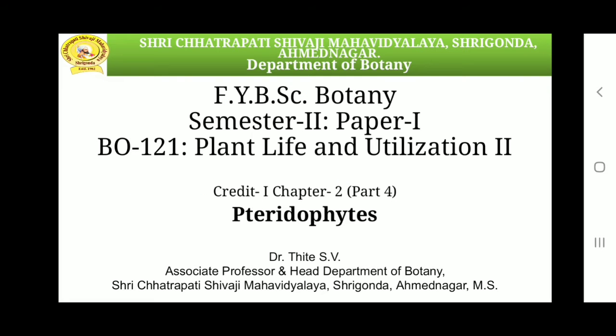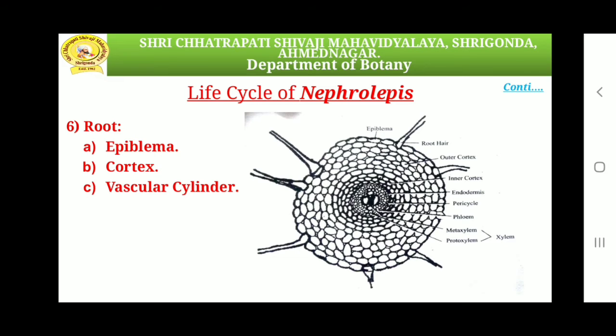First we see the first type of reproduction, that is vegetative reproduction. It takes place by death and decay process of rhizome. When the progressive death and decay of the older part of rhizome reaches up to the place of branching, it separates into two branches and continues to grow as separate individuals. It also takes place by budding from primary and secondary stolons of Nephrolepis, finally giving rise to new plants.